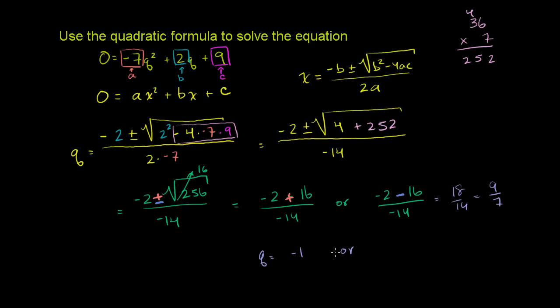Which equals 9 over 7. So q could equal negative 1 or 9 over 7. You could substitute these q's back into the original equation and verify they satisfy it. We could even do it with the first one.